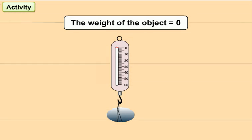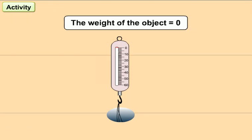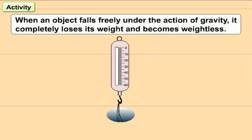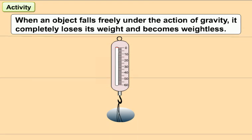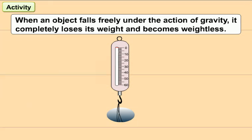This zero weight of the body indicates that the object is weightless. Thus, it is clear that when an object falls freely under the action of gravity, it completely loses its weight and becomes weightless.